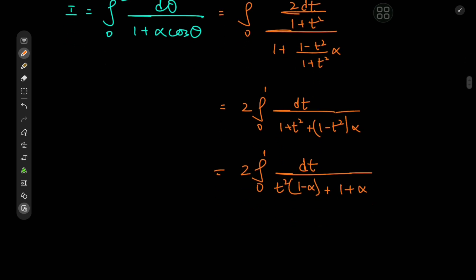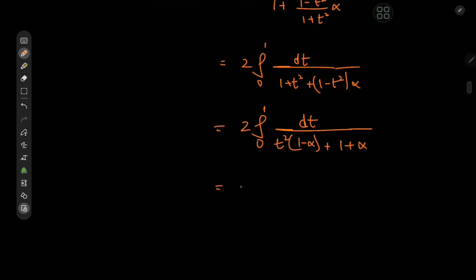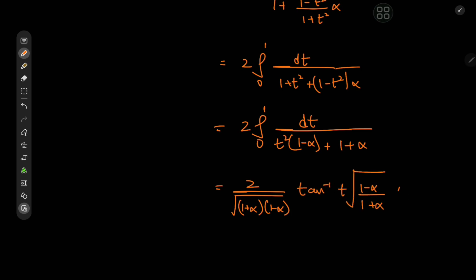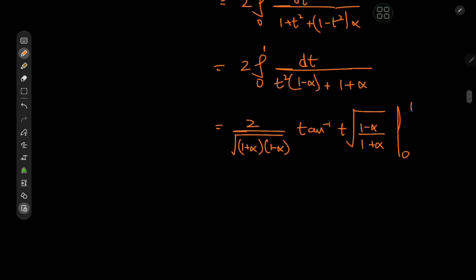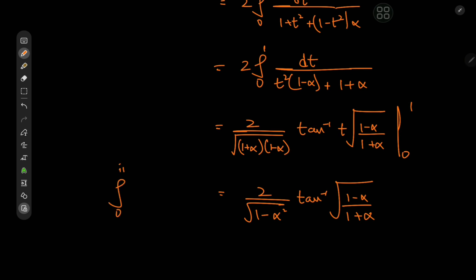This is quite nice because all we have now is an inverse tangent integral. That gives 2/√(1−α²) times arctan(t · √((1−α)/(1+α))), evaluated from 0 to 1. This yields 2/√(1−α²) times arctan(√((1−α)/(1+α))). So the target integral from 0 to π/2 of dθ/(1 + α cos θ) has a generalized result in terms of the α parameter.